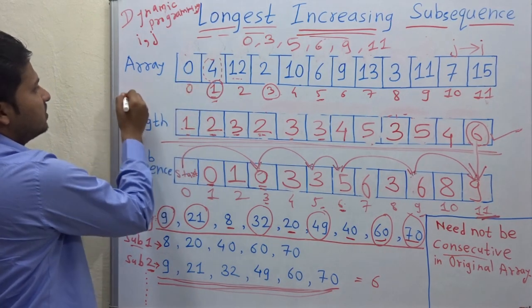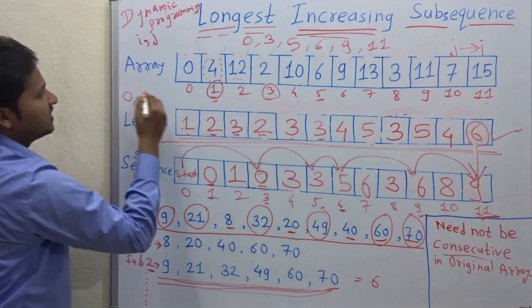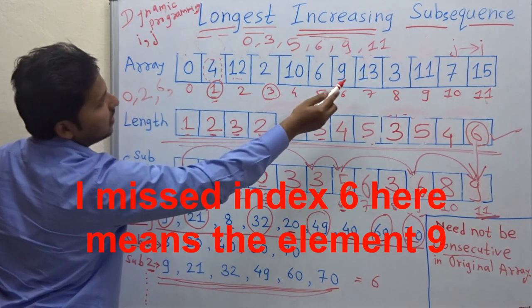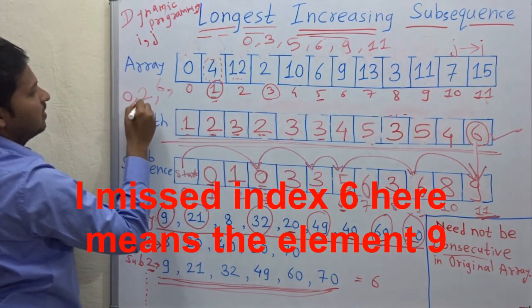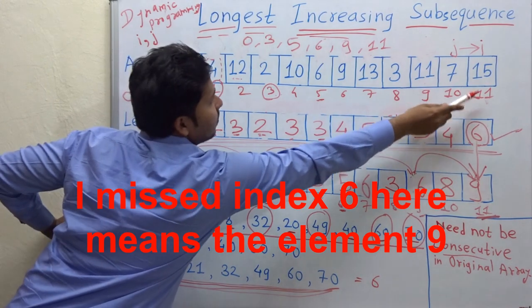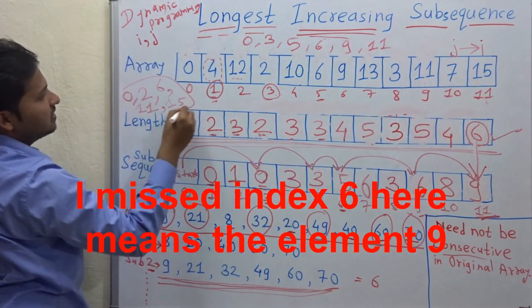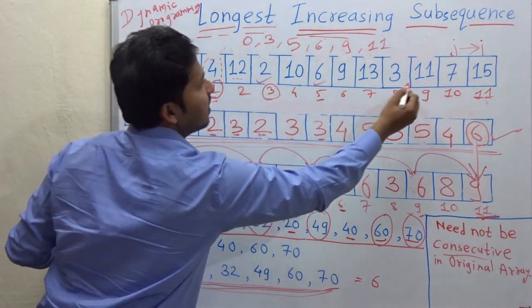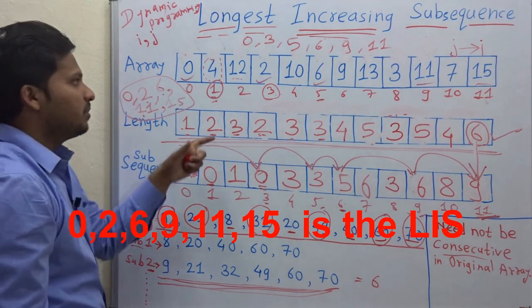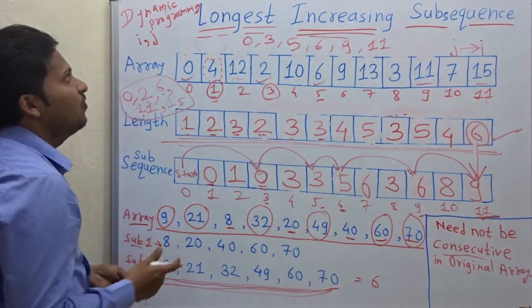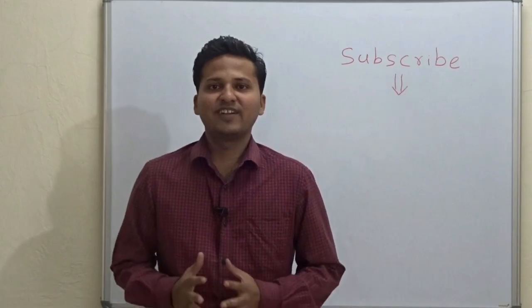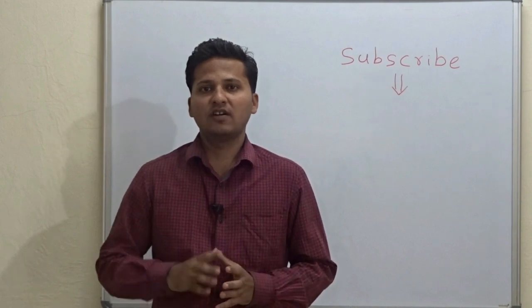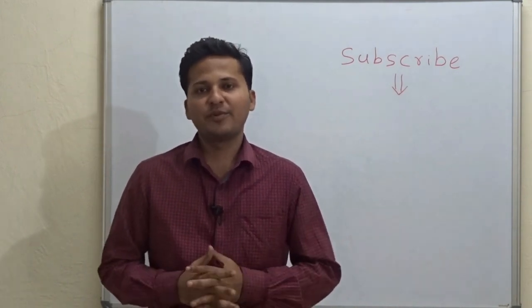The elements at these indices are: at index 0 — 0, at index 3 — 2, at index 5 — 6, at index 9 — 11, and at index 11 — 15. So the longest increasing subsequence is: 0, 2, 6, 11, 15. This is how we find out the longest increasing subsequence. Please subscribe to my channel as I post algorithm videos every day, and if you want a video on any particular topic, please mention it in the comments below. Thank you.